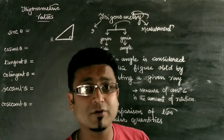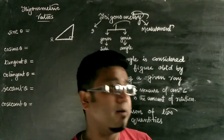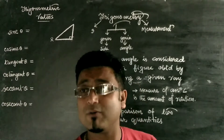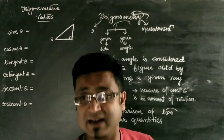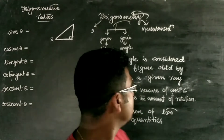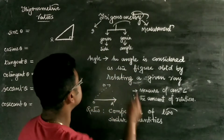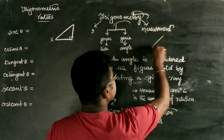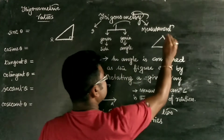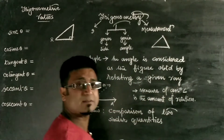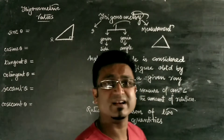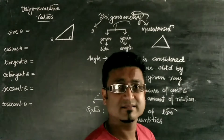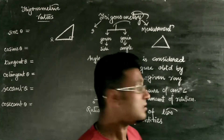So if I combine these three parts, trigonometry is the measurement of a three-sided figure or a three-angle figure. And all of you must have guessed — that means we are dealing with a triangle. Trigonometry is the measurement of sides and angles of a triangle. That's all.